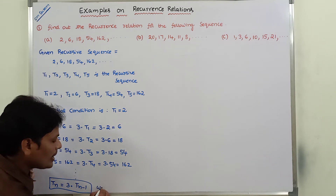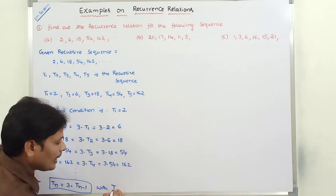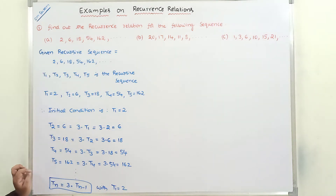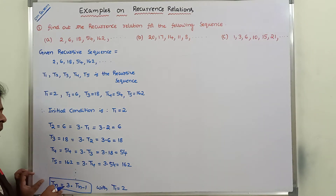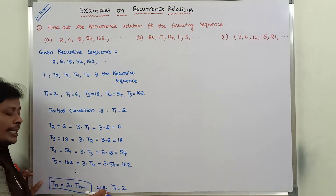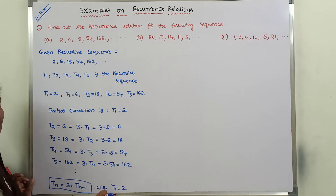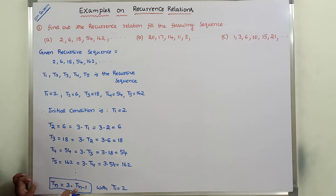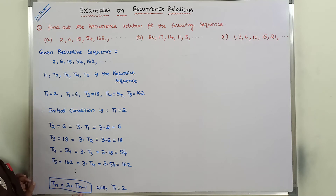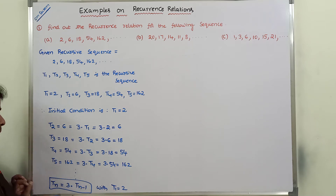With initial condition T1 = 2, let us verify this result. Substituting n = 2: T2 = 3 × T(2-1) = 3 × T1 = 3 × 2 = 6. Yes, it is correct. For T3: T3 = 3 × T(3-1) = 3 × T2 = 3 × 6 = 18. Yes, it is also correct.